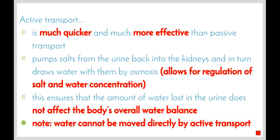If our water levels drop too much, it can lead to problems with many of our different organs. One important point to note, however, is that water cannot be moved directly by active transport. We therefore require both passive and active transport to take place for the effective movement of both water and the nitrogenous wastes and salts that need to be removed. That's it for today's video on the processes involved in passive and active transport and why active transport is much more effective than passive transport alone.